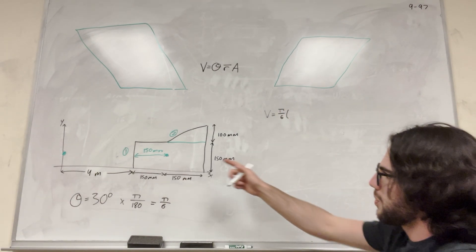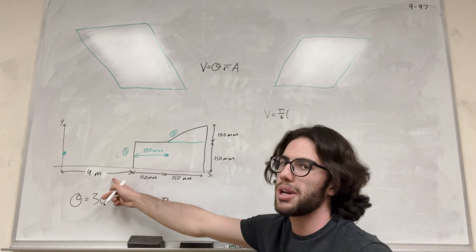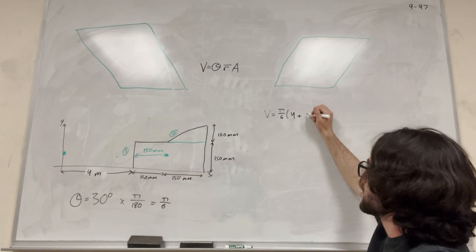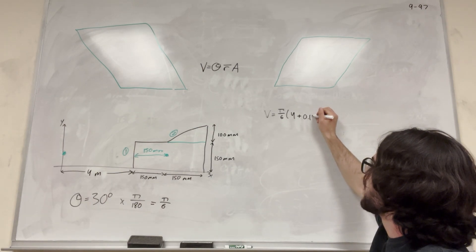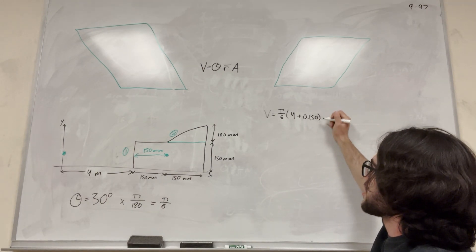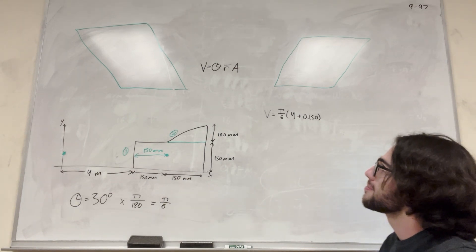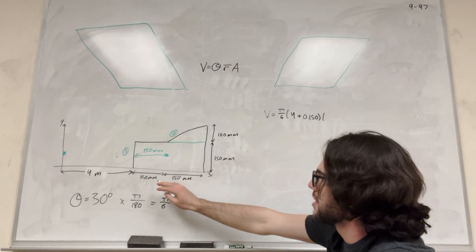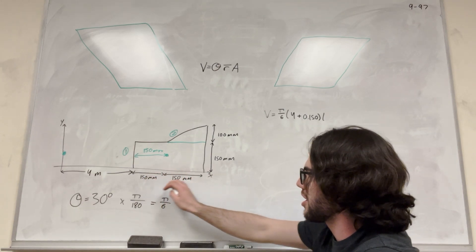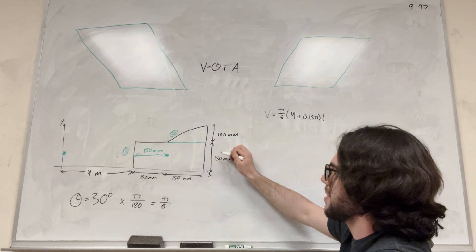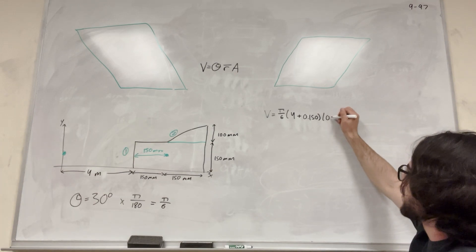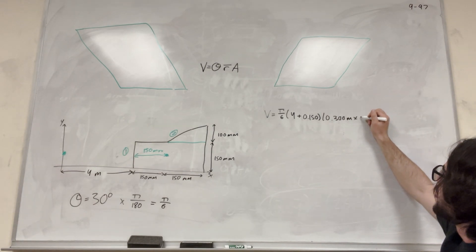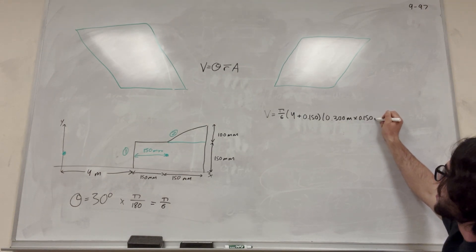For shape 1, the radius is 4 meters plus 150 millimeters, which is 0.15 meters — making sure we're in the same units. The area of this rectangle is 300 millimeters on the bottom times 150 millimeters on the side, which converted to meters is 0.3 meters times 0.15 meters.